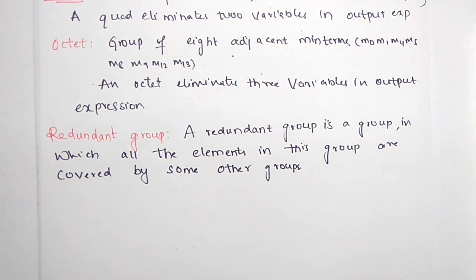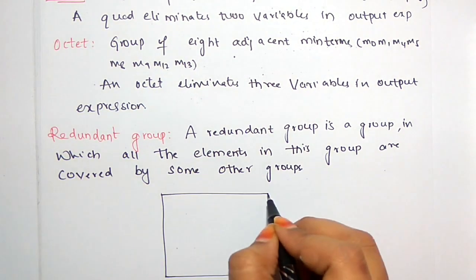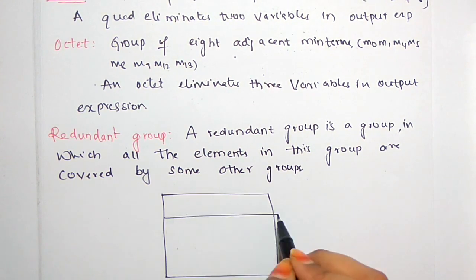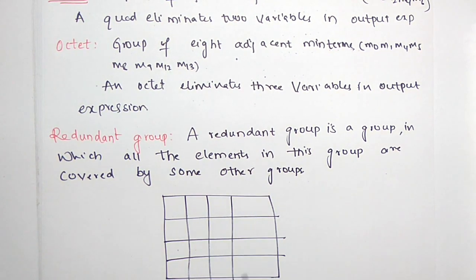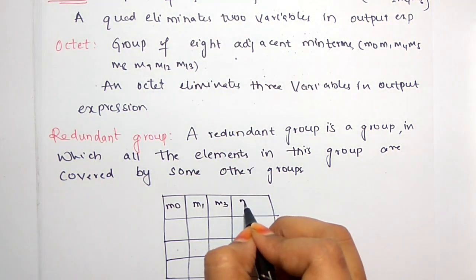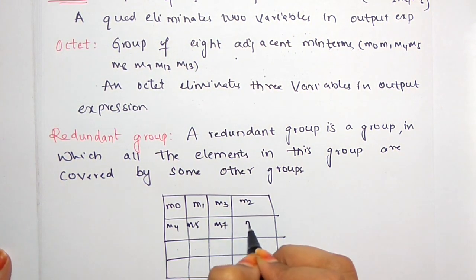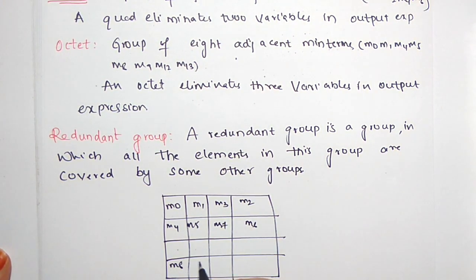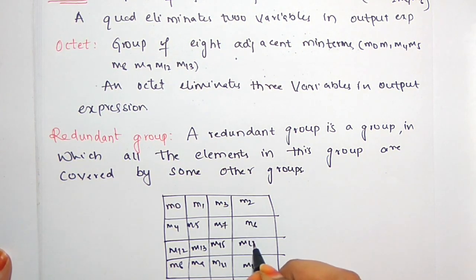We will see an example. The minterms considered are M0, M1, M3, M2, M4, M5, M7, M6, M8, M9, M11, M12, M13, M15, and M14.